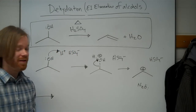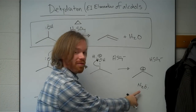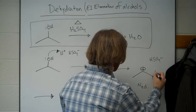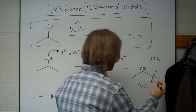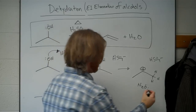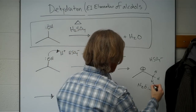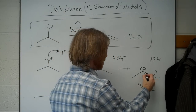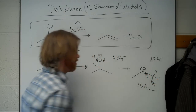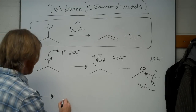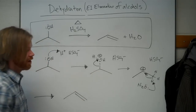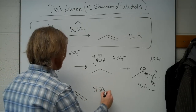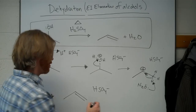So this is an elimination. All we need is a weak base like water, which can remove one of those hydrogens. And then the carbon-hydrogen bonding electrons go to make our alkene. So our final product, as above, forms our double bond, still left with HSO4.